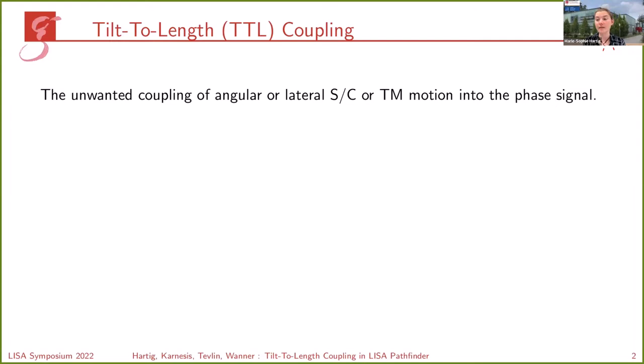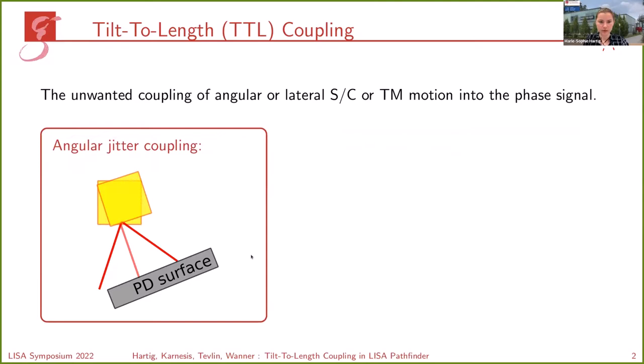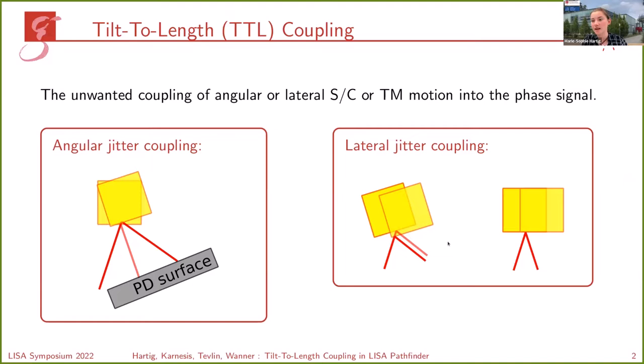Tilt-to-length coupling is the unwanted coupling of angular or lateral jitter of either the spacecraft or a test mass into the phase signal. Taking the example of the test mass jitter, the test mass tilts, the beam path changes, and hence the phase signal changes as well. Likewise, we refer to lateral jitter coupling as tilt-to-length coupling since it only couples into the signal if the test mass is tilted.